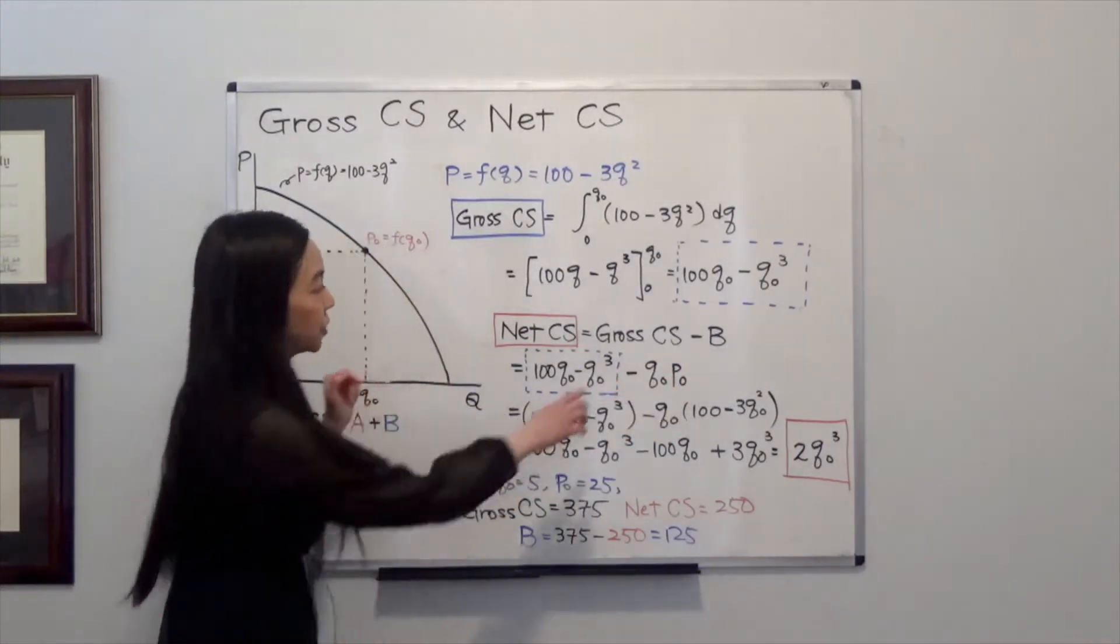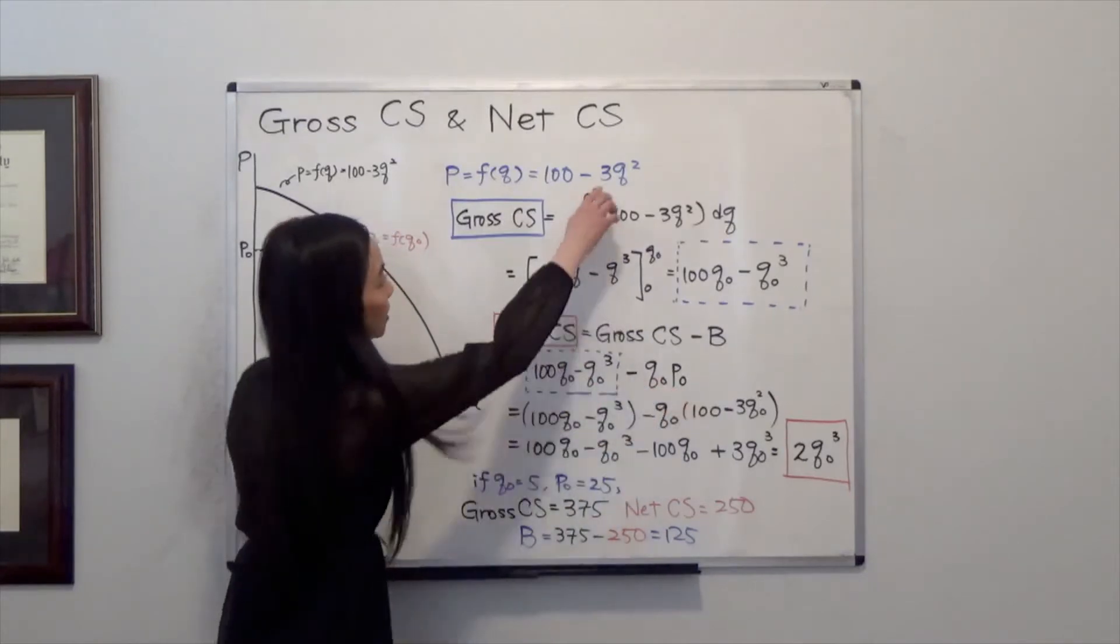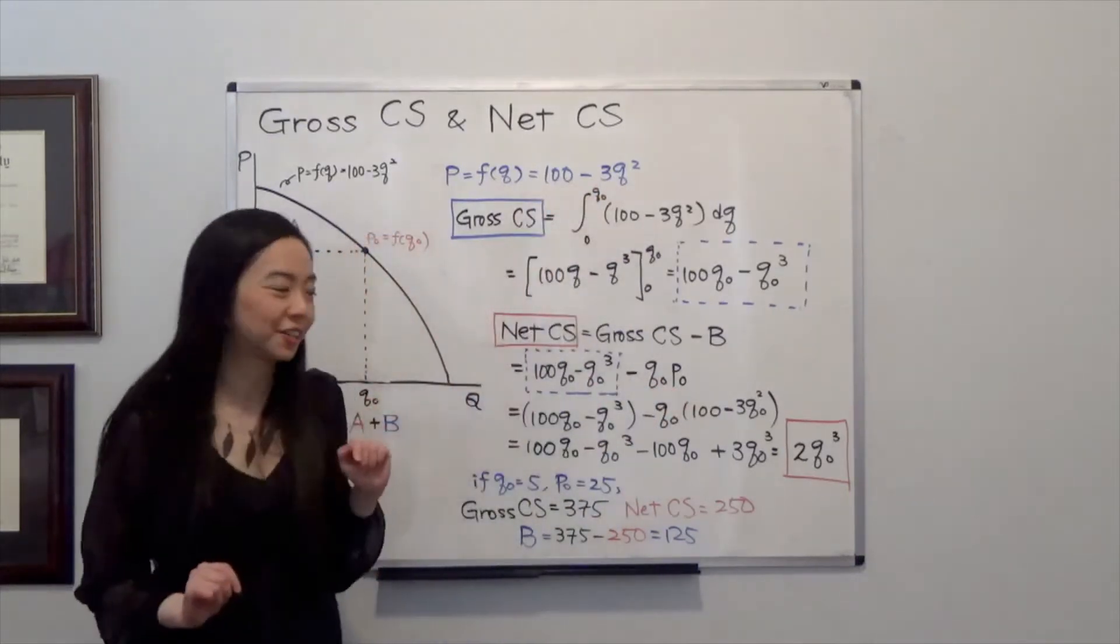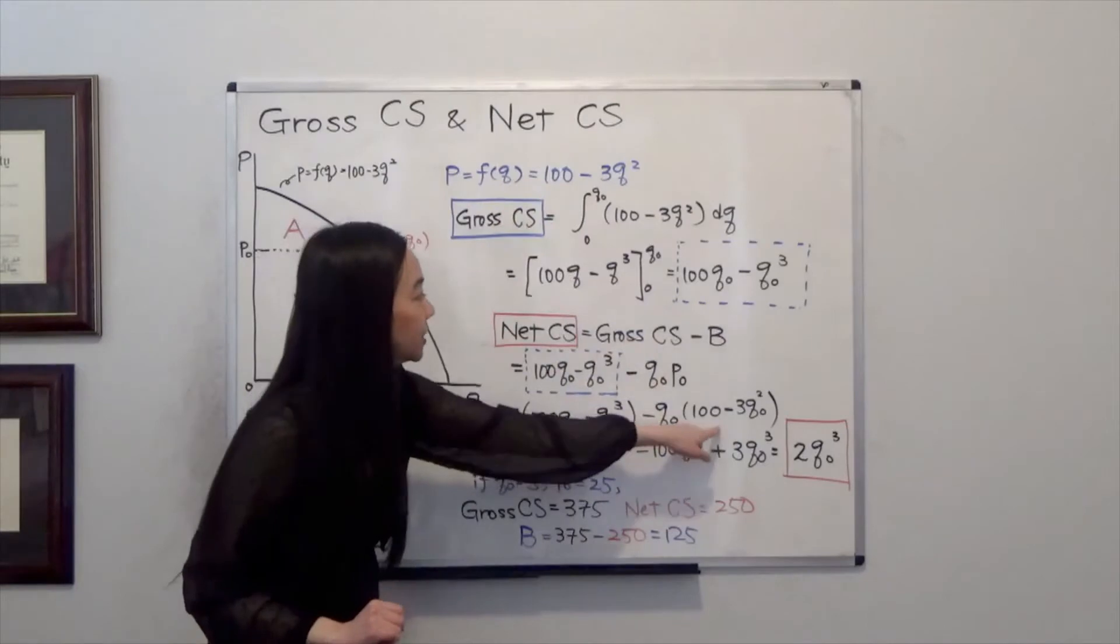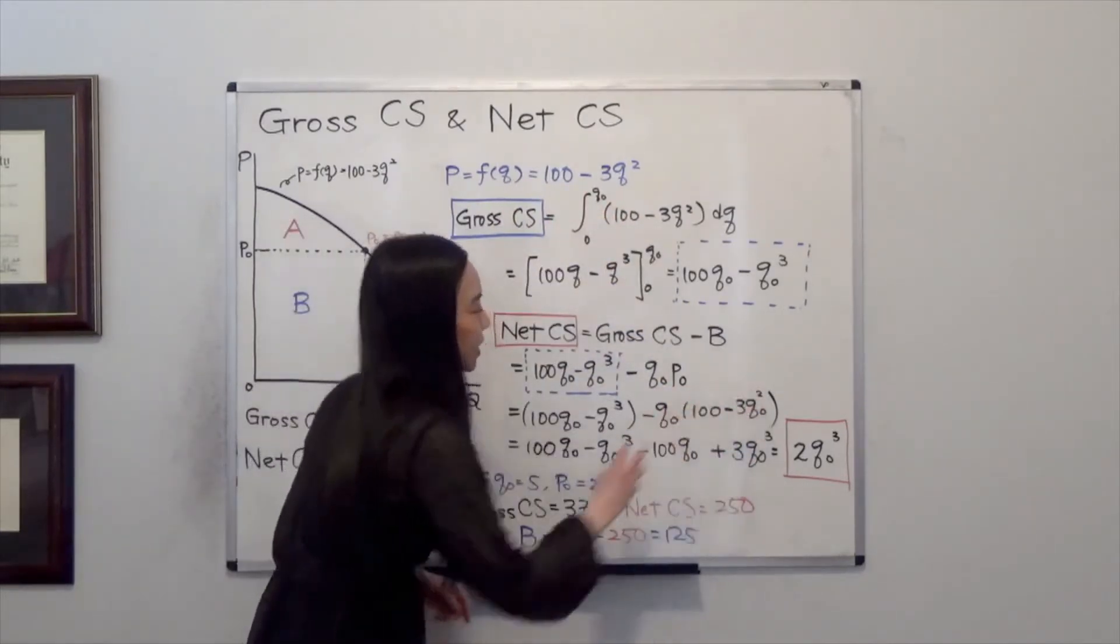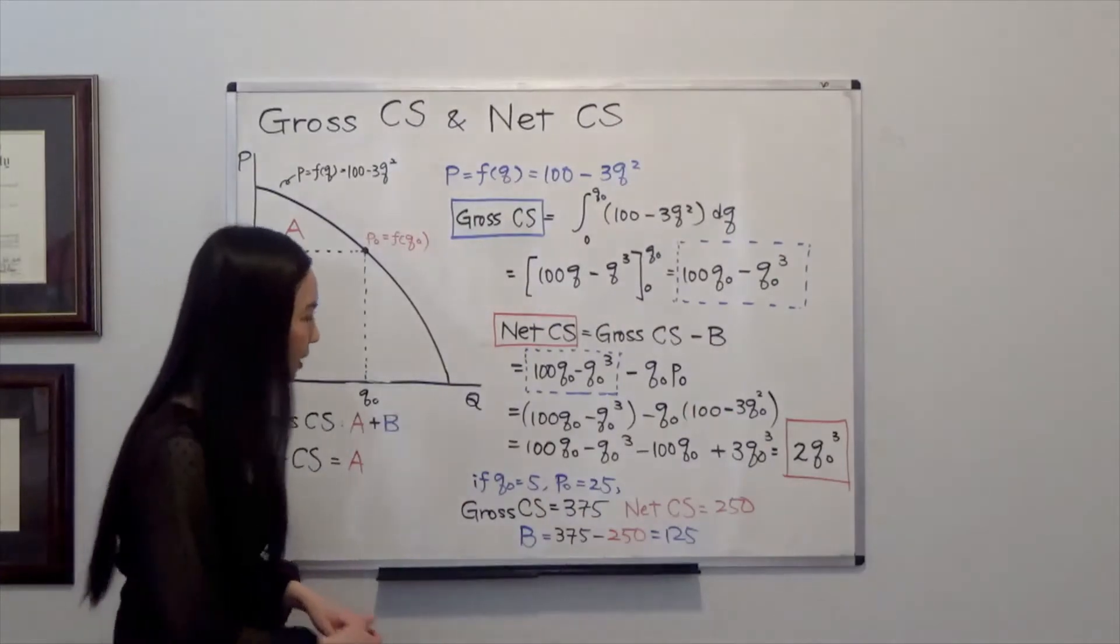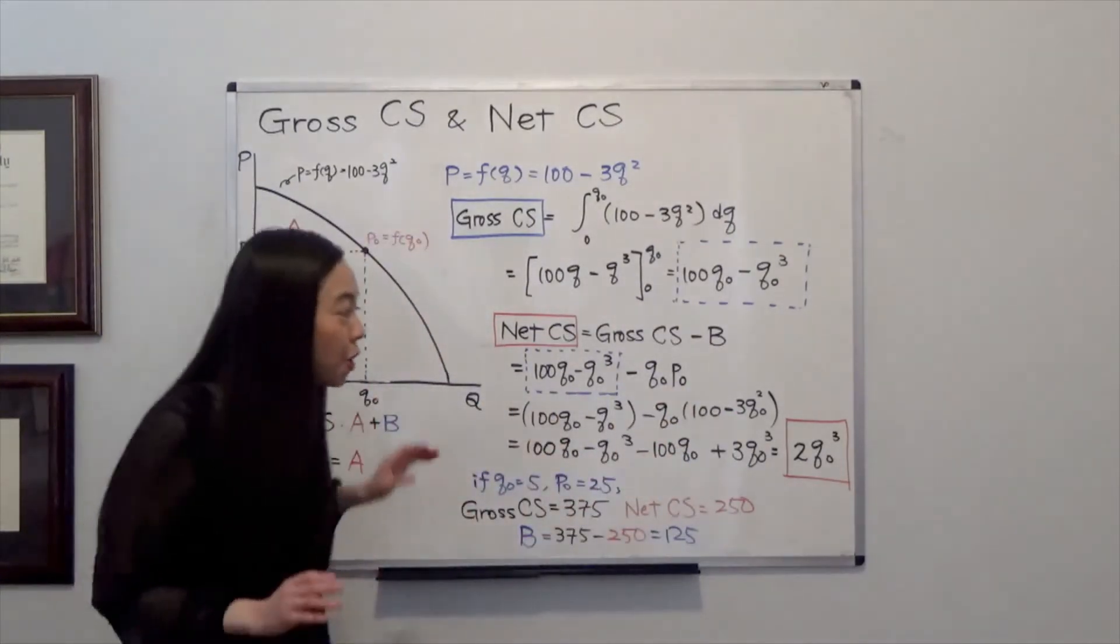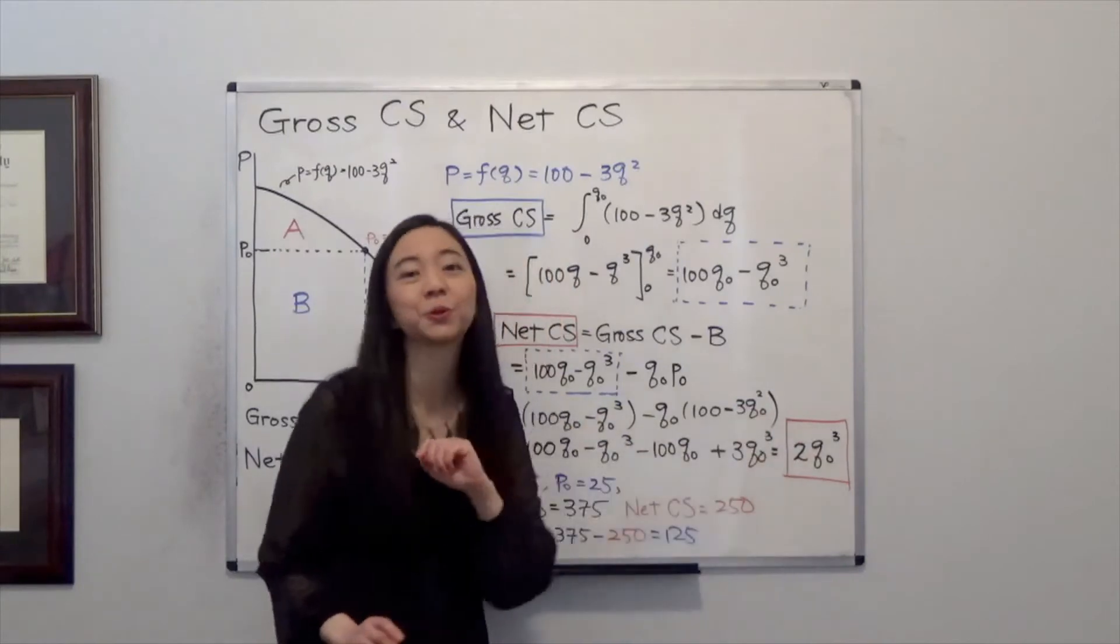But P0 is also equal to, plugging Q0 into this inverse demand function, you get 100 minus 3Q0 squared. That is our P0. So after you calculate that, you are left with 2Q0 cubed. That would be our net consumer surplus.